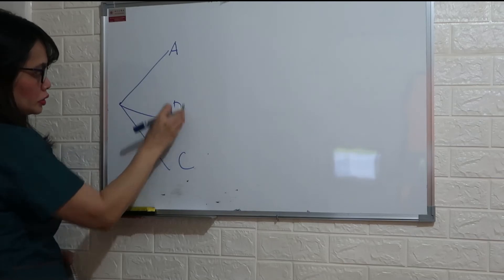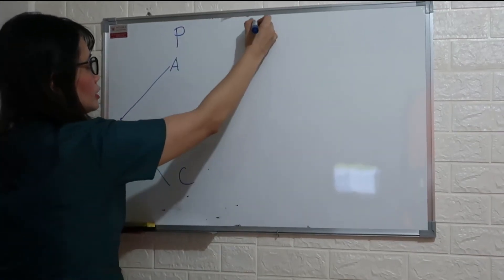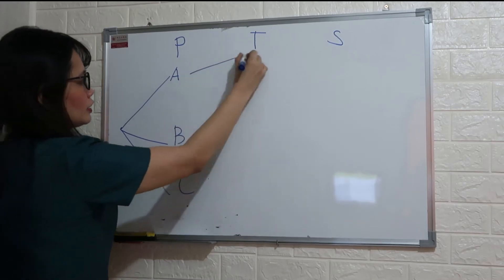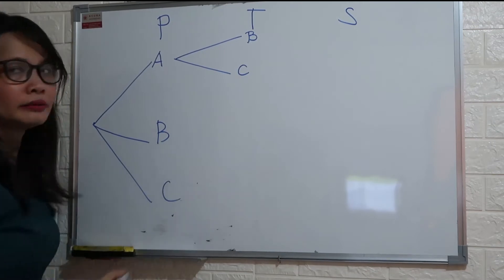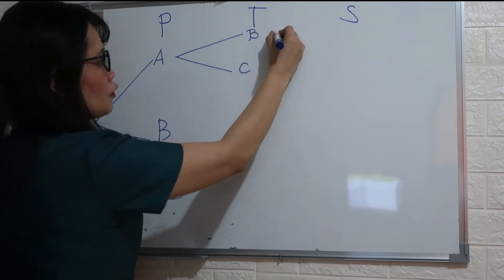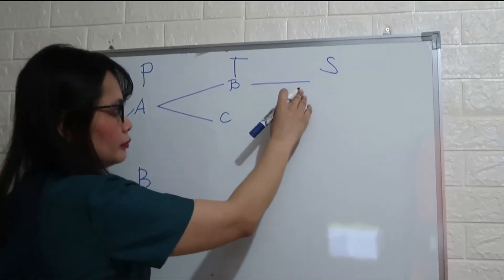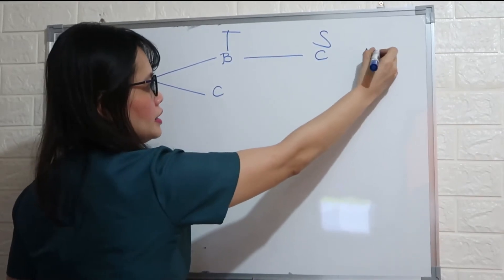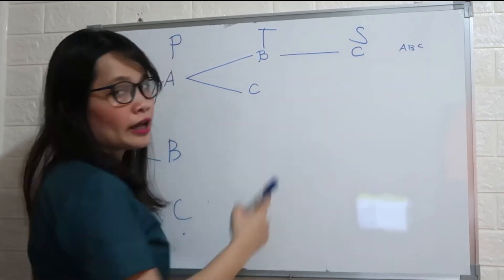So we have three positions — president, treasurer, and secretary. If member A is the president, for the treasurer the options are member B or member C. If member A is president and member B is treasurer, therefore for the secretary it must be member C. So the first outcome is A, B, C — A is president, B is treasurer, and C is secretary.